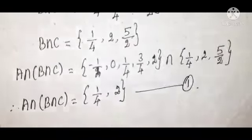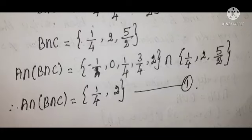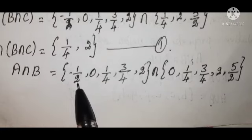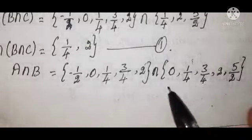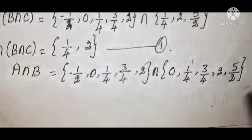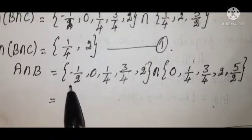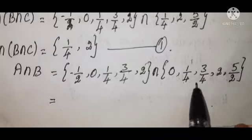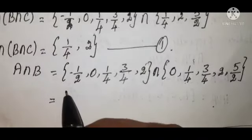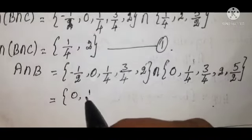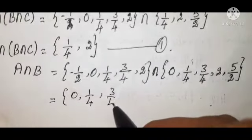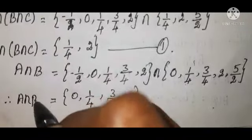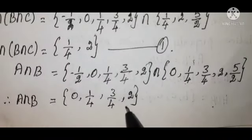Now find (A intersection B): A is {-1/2, 0, 1/4, 3/4, 2} intersection B which is {0, 1/4, 3/4, 2, 5/2}. The common values are 0, 1/4, 3/4, and 2. Therefore A intersection B equals {0, 1/4, 3/4, 2}.